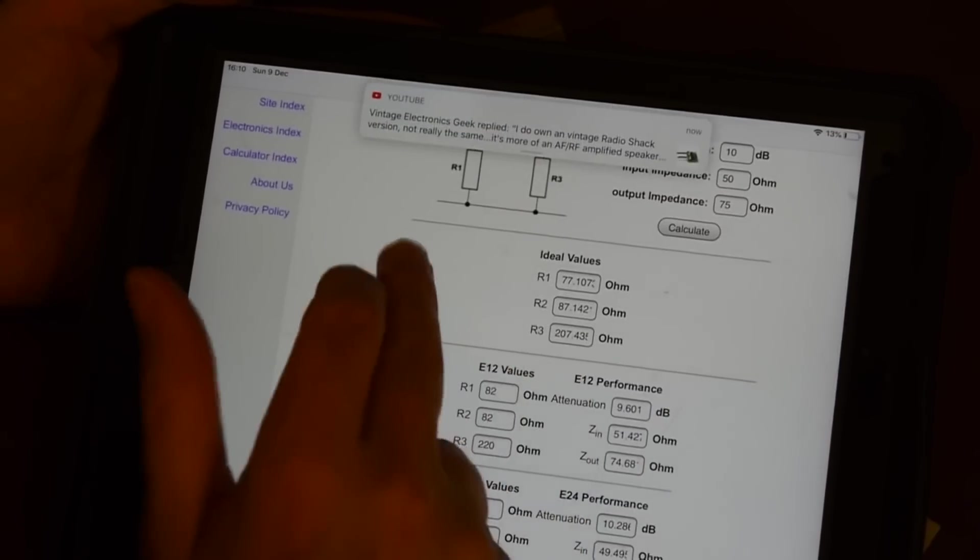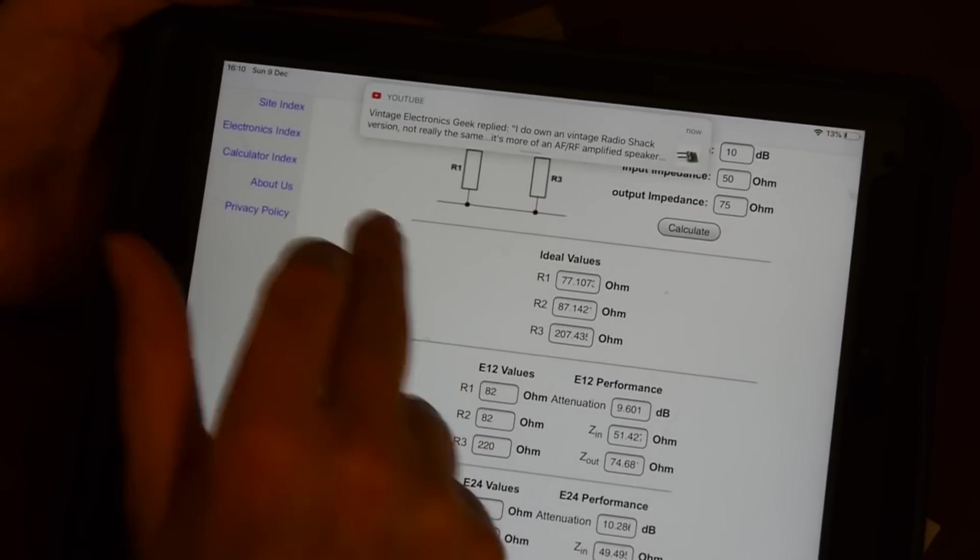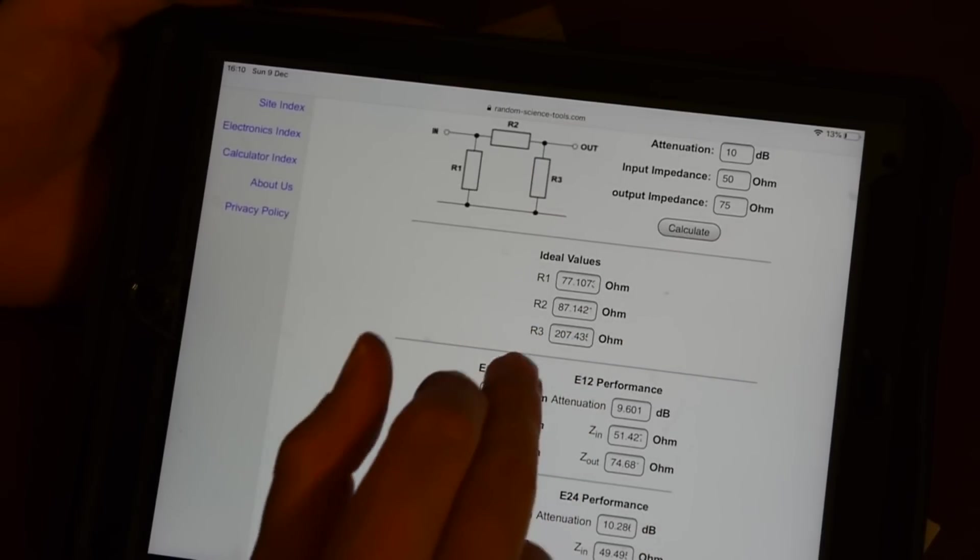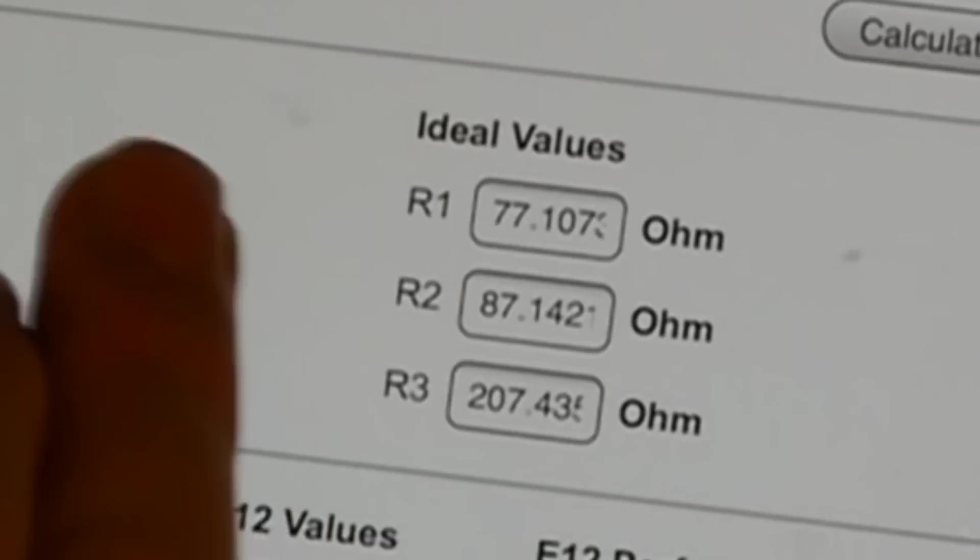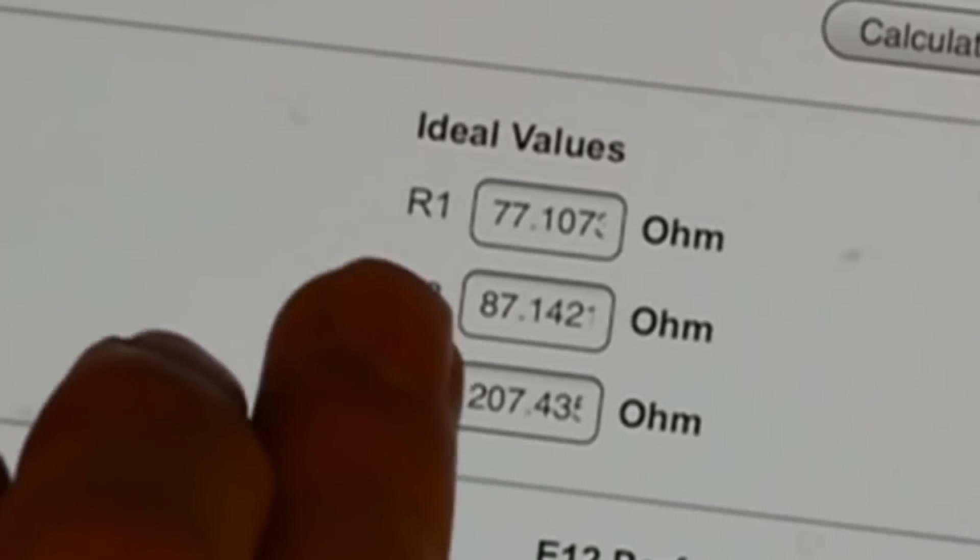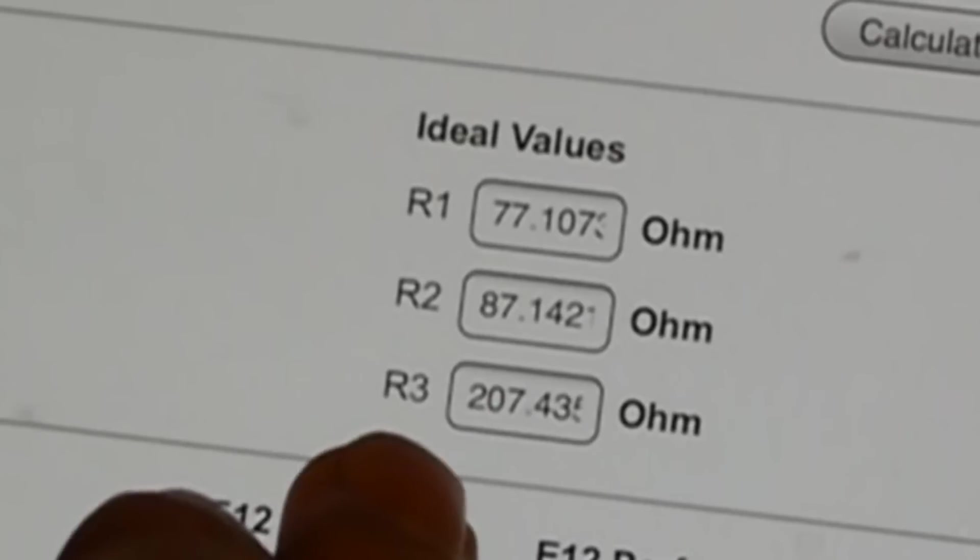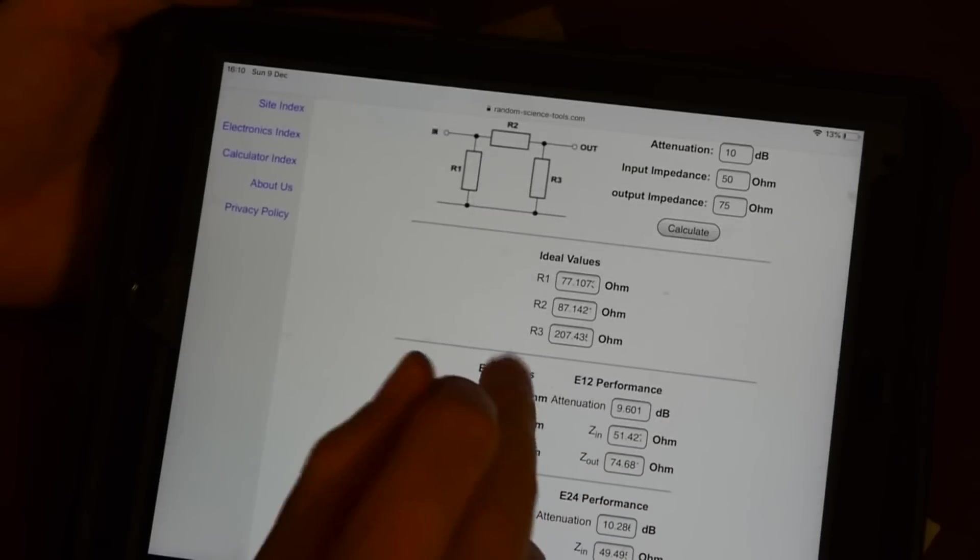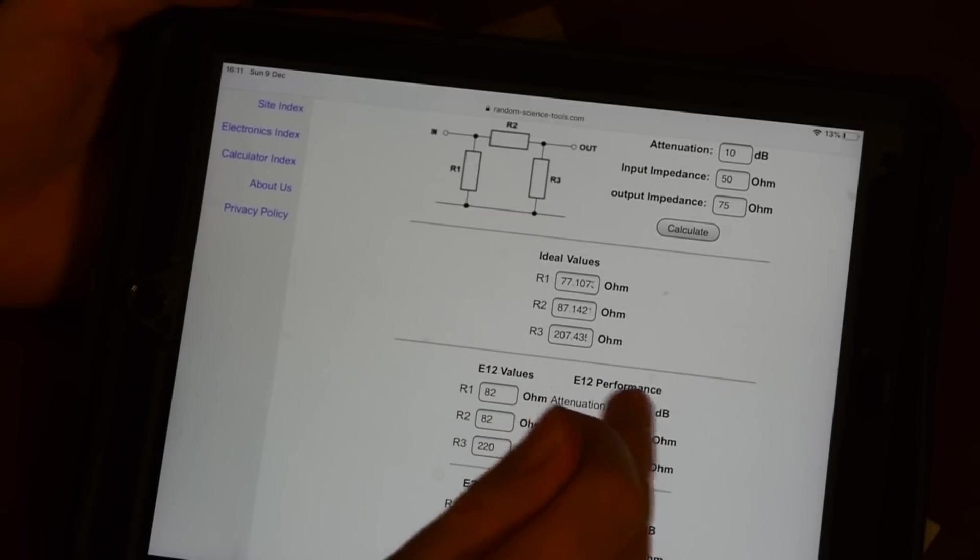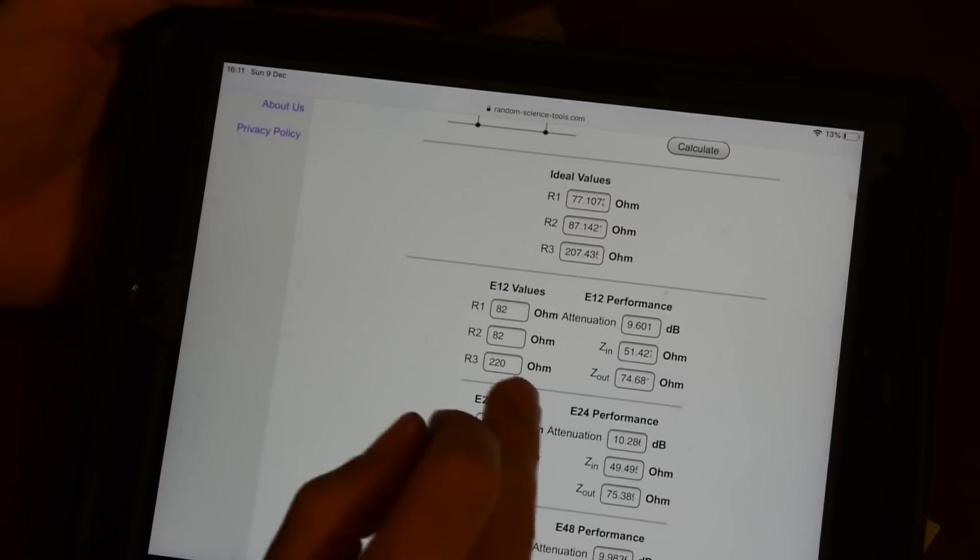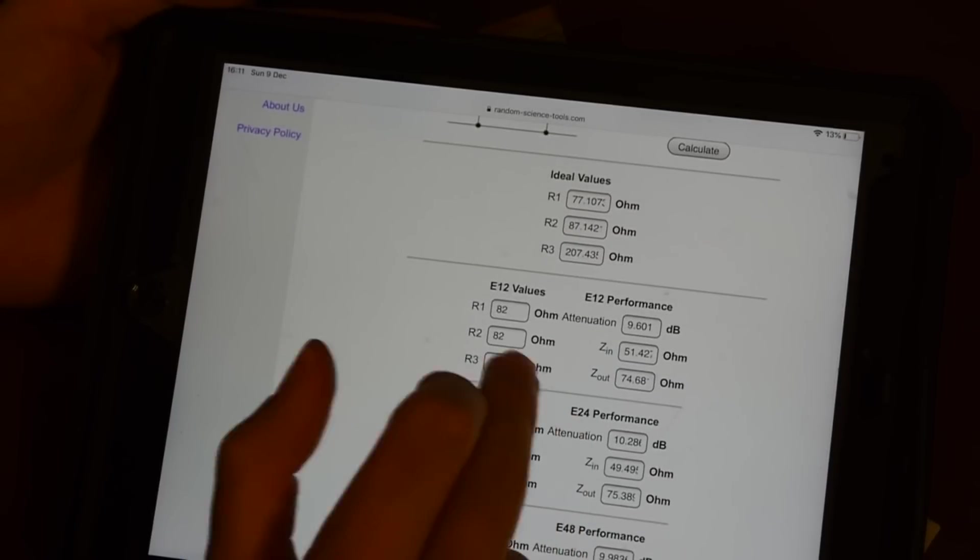You press calculate and it will work out the ideal values here. It's saying that ideally R1 resistor would be 77.107 ohms, R2 would be 87.142 ohms and R3 would be 207.43 ohms. You can't buy these values off the shelf. You could do combinations of resistors in series and parallel, but I'm not too concerned about getting exact values or exact measurements.